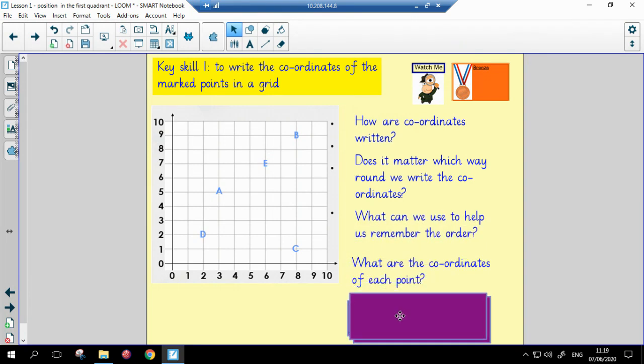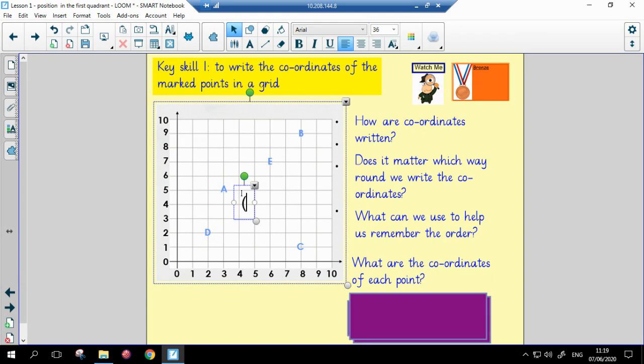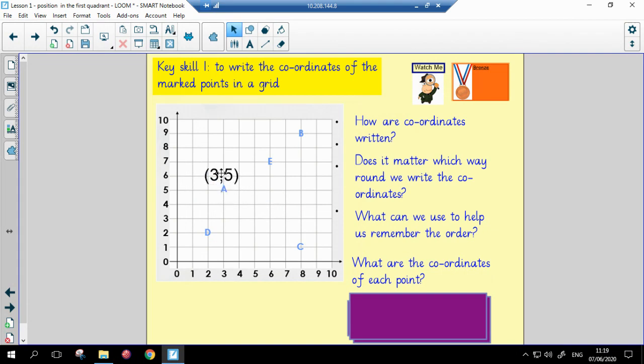And I wonder if you can remember the little saying that we use to remember the order. We always say, along the corridor, and then up the stairs, along the corridor and up the stairs. So, let's have a look at position A. We need to remember to open the brackets. We look at the position of A along the x-axis, which is 3. Follow it with a comma. Then we look at the position on the y-axis, which is 5, and close the brackets. And there's our coordinate for A.